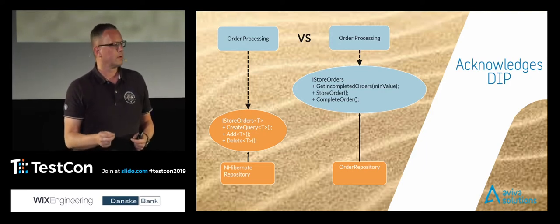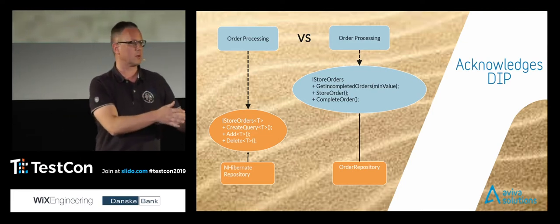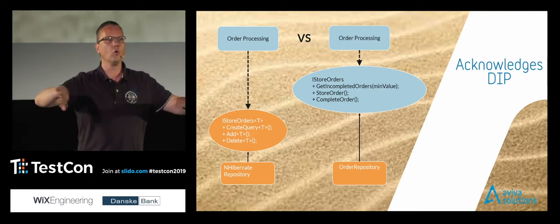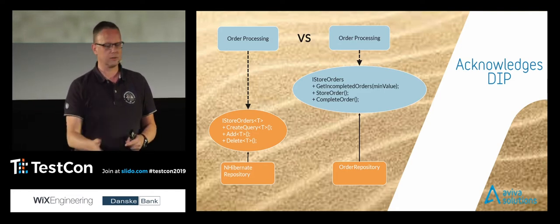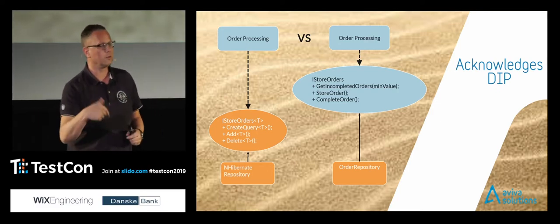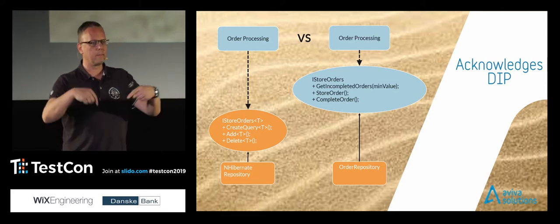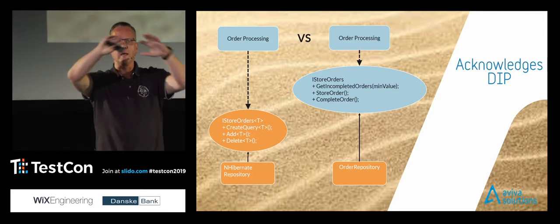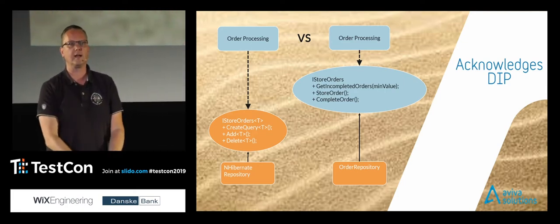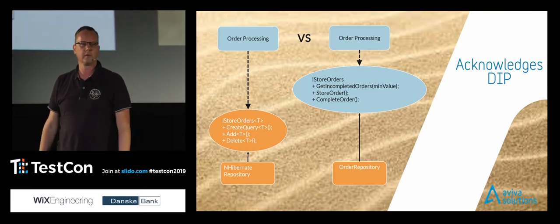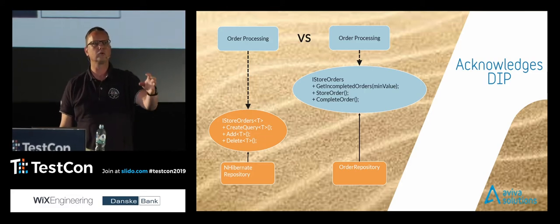Instead, you build a module that defines a contract — what's the rest of the system — and then you can still use mocking if you want, but it will be really specific. The interface is specifically designed for the order processing module. If another module needs something similar, it defines its own contract. The contract evolves with the owner. If you take this on a really big scale you end up with an onion architecture or hexagonal architecture — a beautiful concept. If you practice this, your tests will look really different and much clearer.